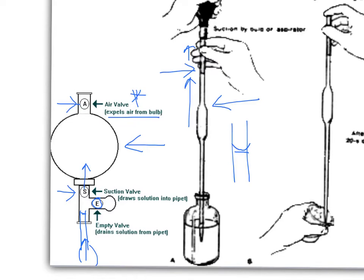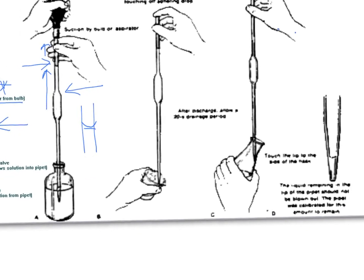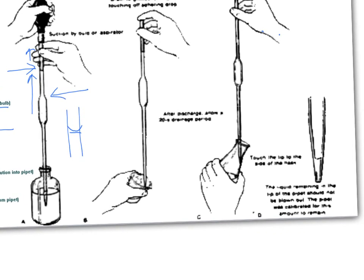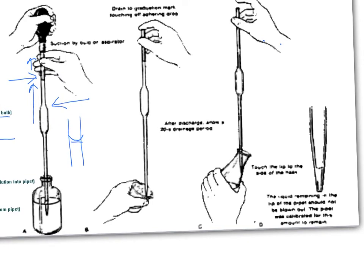Then you're going to take it out of the solution that you're sucking up. You're going to lift the pipette out, press the E button, the expelling one, and take it down to the meniscus. So you're going to press it until it comes down to that meniscus.